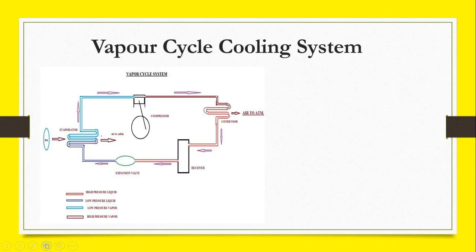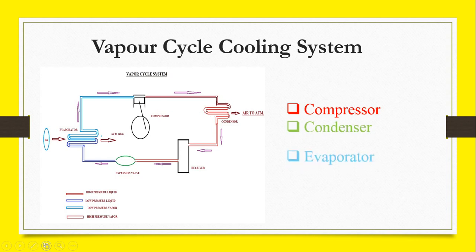Vapor Cycle Cooling System is one of the methods of pressurized cabin. Now we will go through the schematic diagram and what are all the parts we have for this Vapor Cycle Cooling System. The components are: compressor, condenser, evaporator, receiver, and expansion valve.